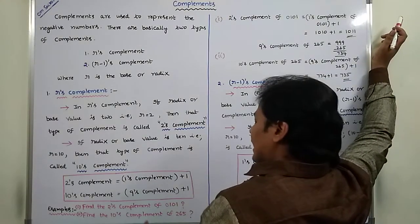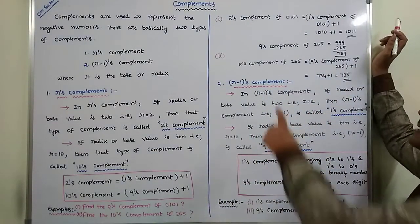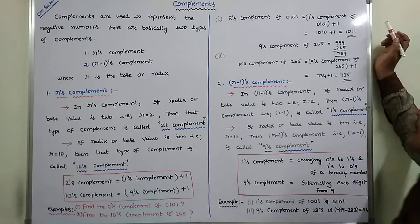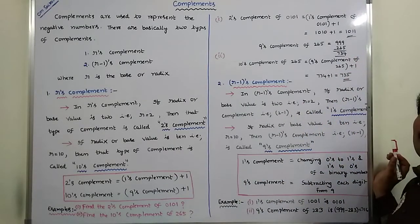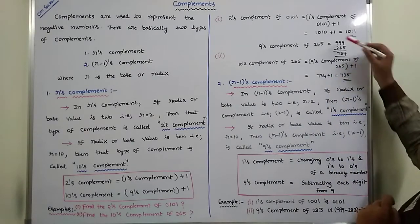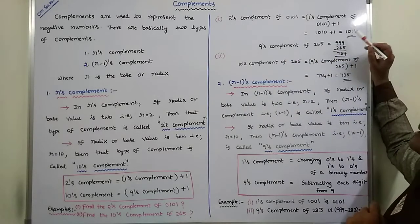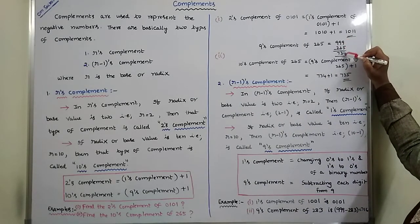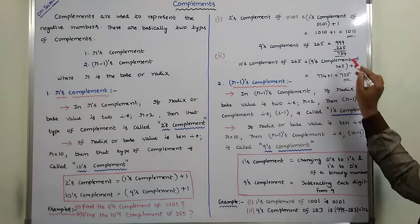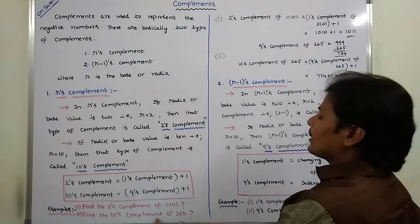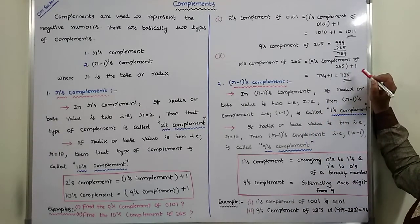Second problem: find the 10's Complement of 265. So, 10's Complement of 265 is equal to 9's Complement of 265 plus 1. The 9's Complement of 265 is obtained by subtracting each and every digit from 9: 9 minus 5 is 4, 9 minus 6 is 3, 9 minus 2 is 7. So the 9's Complement of 265 is 734, plus 1 equals 735. So the 10's Complement of 265 is 735.